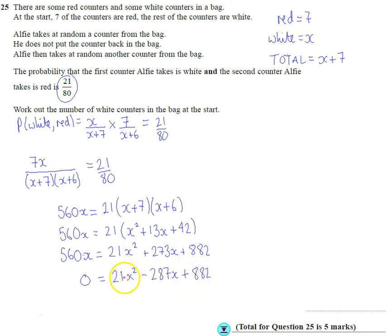So with a bit of experiment, I just tried out my calculator. I thought 21 might go into everything, it's not true, it doesn't. So I divided everything by 7. 21X squared over 7 is 3. 287X over 7 is 41. And 882 over 7 is 126.